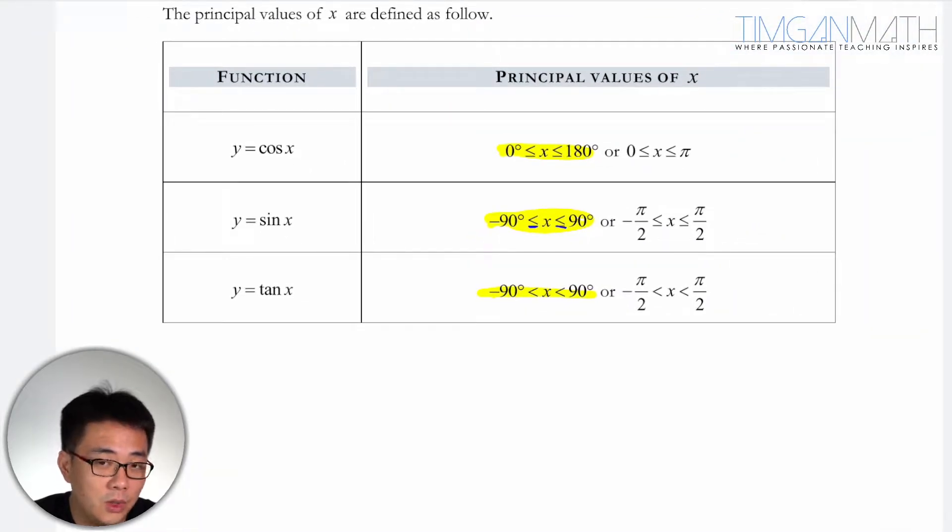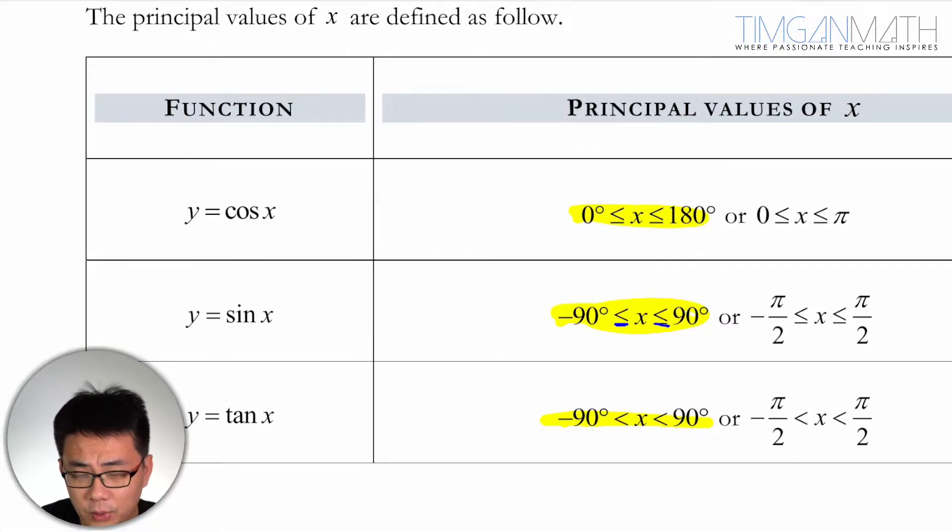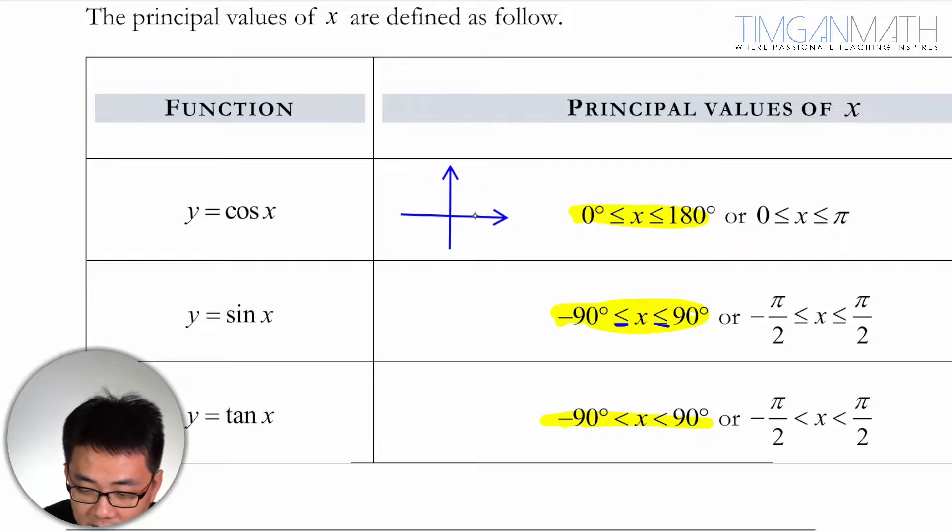Now you may wonder how do we arrive at 0 and 180. So I'll just give a brief explanation. The explanation is because of ASTC.